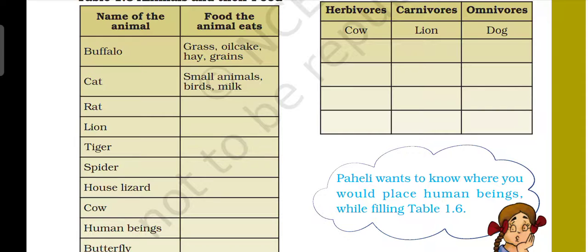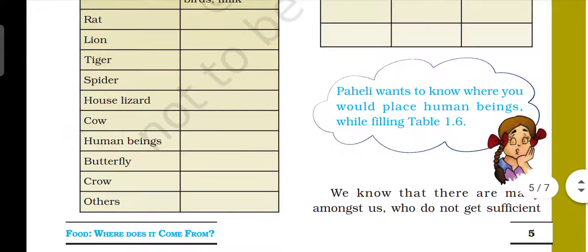Rat kya khaayega? Meat. Tiger also eats meat. Spider eats small insects as food. House lizard also eats small insects as food.